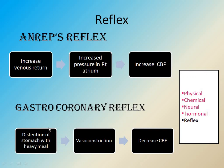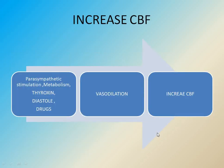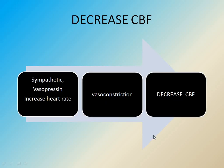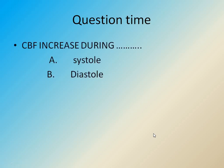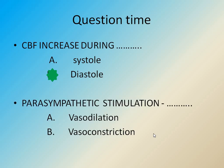In the gastrocoronary reflex, when we eat and the stomach becomes distended, it causes vasoconstriction, decreasing coronary blood flow. Summary: blood flow is increased by parasympathetic stimulation, metabolism, thyroxine, diastole, and drugs via vasodilation. Blood flow is decreased by sympathetic stimulation, vasopressin, and high heart rate via vasoconstriction. Question time: coronary blood flow increases during diastole; parasympathetic stimulation causes vasodilation. Thanks for watching.